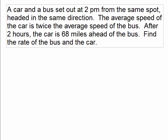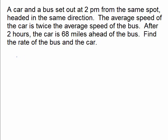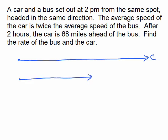Here's another one. A car and a bus set out at 2 p.m. from the same spot headed in the same direction. The average speed of the car is twice the average speed of the bus. After two hours, the car is 68 miles ahead of the bus. This is yet another one. A car and a bus are leaving at the same time, same spot, so eventually the car gets ahead. There's the car, and there's the bus, he doesn't get as far. But how far ahead is the car? It's ahead by 68 miles, so I know that however far the bus went, plus this little piece of 68 miles, that would be the total distance the car went.